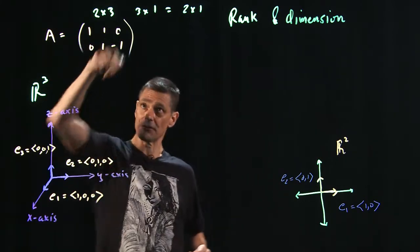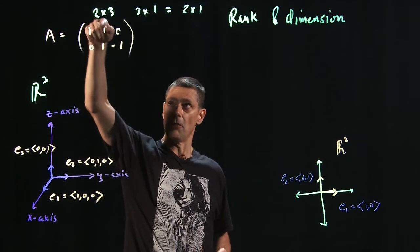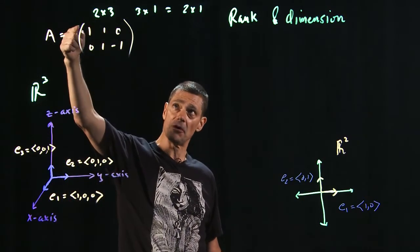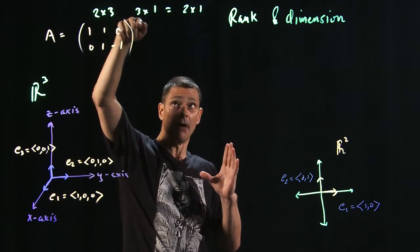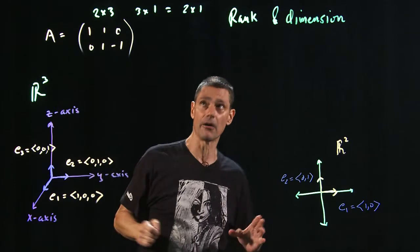A, it is a 2 by 3 matrix. If you multiply a 2 by 3 matrix, you're going to have to multiply it by a 3 by something. We are using vectors, so it's going to be a 3 by 1, and it's going to spit out a 2 by 1.